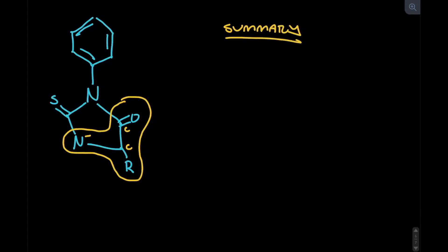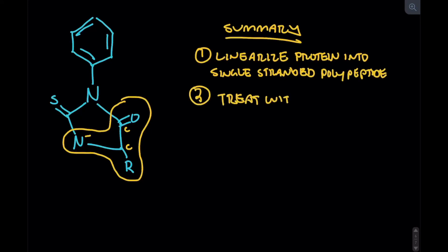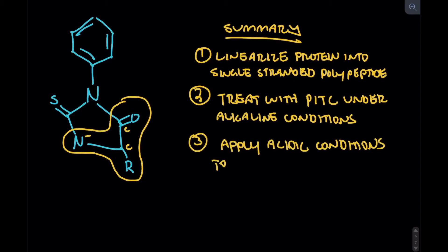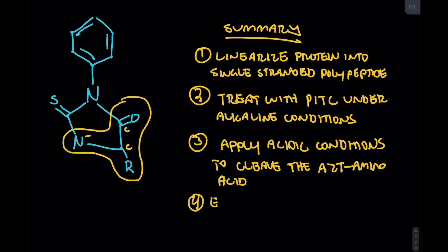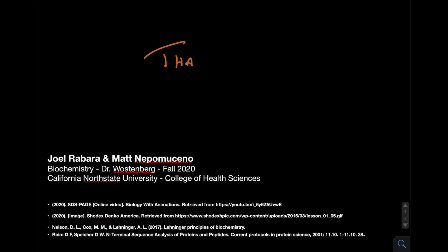In conclusion, let's summarize the steps: First, linearize the protein into a single-stranded polypeptide using a technique such as SDS-PAGE. Second, treat with phenyl isothiocyanate under alkaline conditions. Third, apply acidic conditions to cleave the amino acid from the rest of the polypeptide chain. Finally, extract, isolate, and identify the amino acid using high-performance liquid chromatography. Thank you very much for watching this video. We hope you enjoyed it, and good luck in your continued studies.